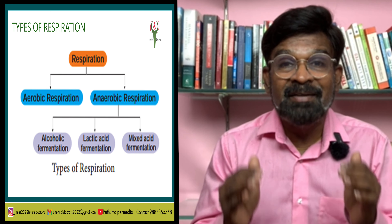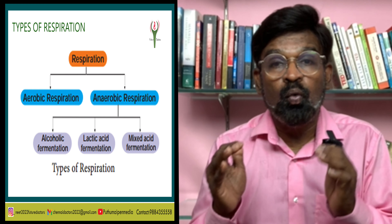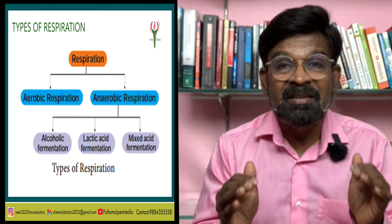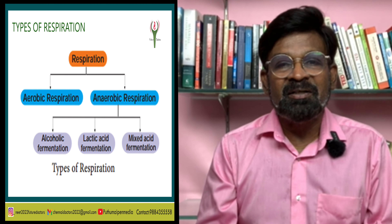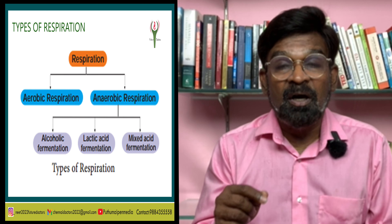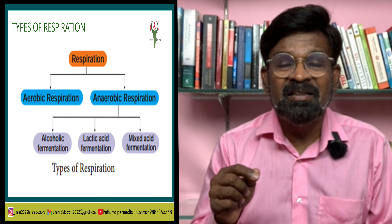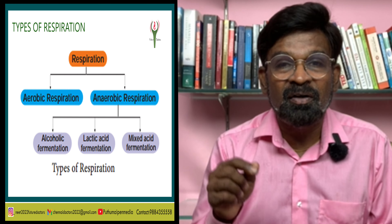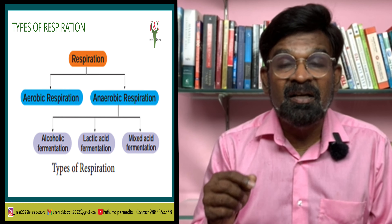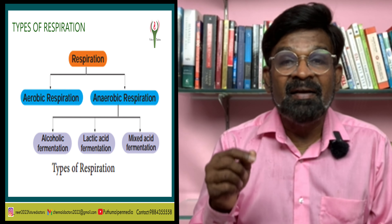Aerobic respiration is the type of respiration in which an organism utilizes oxygen for the complete oxidation of organic food into carbon dioxide, water, and energy. It starts in the cytoplasm and is completed inside the mitochondria. In anaerobic respiration, organic food is oxidized incompletely; it occurs in the cytoplasm and releases a small amount of energy.